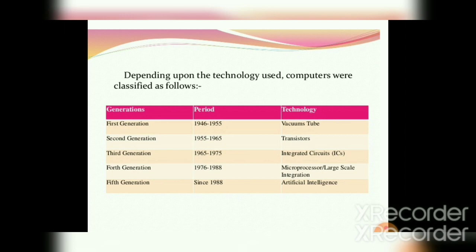The first generation of computers is from 1946 to 1955, which used vacuum tubes as the main component. The second generation is from 1955 to 1965, which used transistors. The third generation is from 1965 to 1975, with integrated circuits — also called ICs or chips — as the main component.